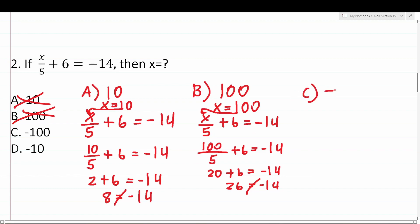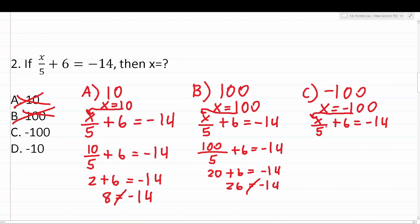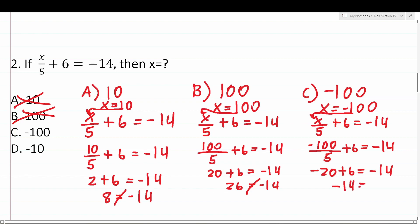Let's plug in c, which says x equals negative 100. Substituting into x over five plus six equals negative 14: negative 100 over five plus six equals negative 14. Negative 100 divided by five is negative 20. Negative 20 plus six is negative 14. Does negative 14 equal negative 14? It does — that's a true mathematical statement. Therefore, the correct answer to number two is c, negative 100.